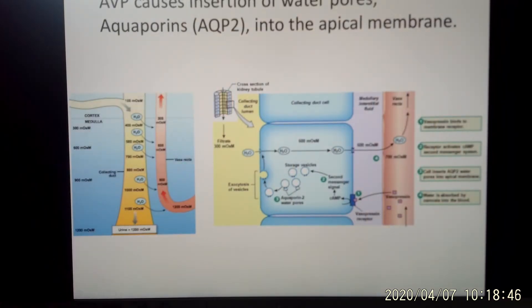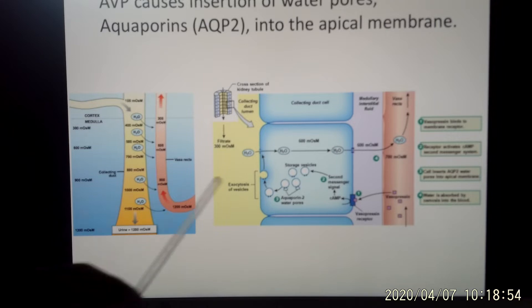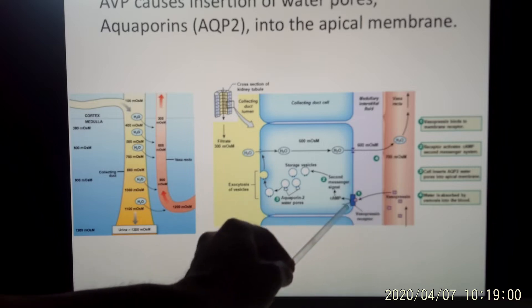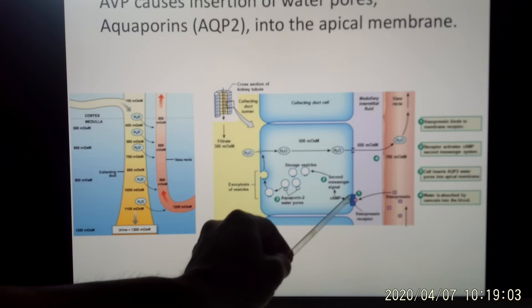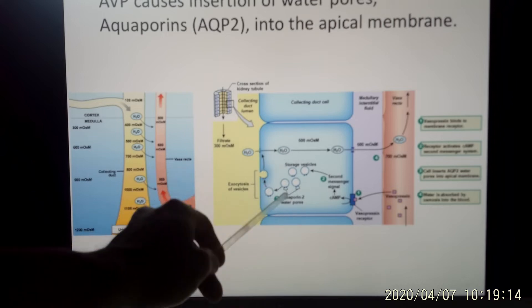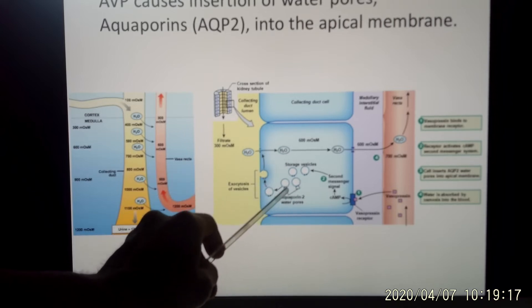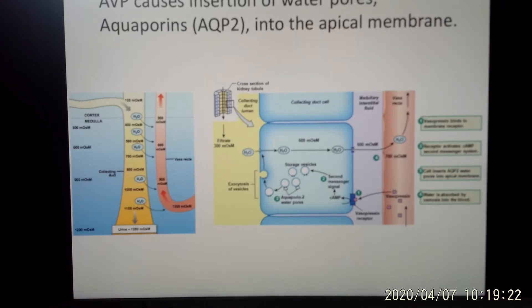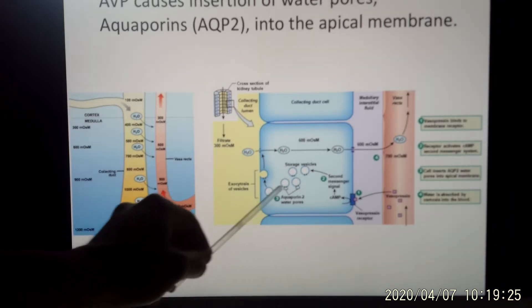At the molecular level, vasopressin is a peptide (neural) hormone and has no problem being transported by blood. It binds with the vasopressin receptor, which triggers the second messenger system using cyclic AMP. Once cyclic AMP is activated, the cellular response is to upregulate aquaporin-2 — the water channel — moving it from the cytosol back to the cell membrane.